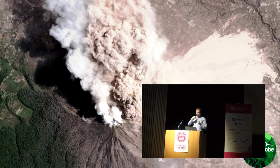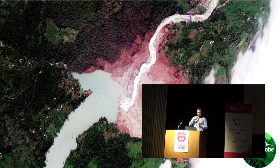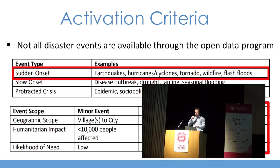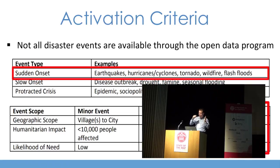We want to get the imagery into the hands of people who can take action with it and create actionable information. We collect photos of volcanoes, landslides, and other disaster events as editable layers to provide situational awareness on the ground — earthquakes, hurricanes, tornadoes, wildfires, floods — events affecting more than 100,000 or 200,000 people. These are the events we cover.